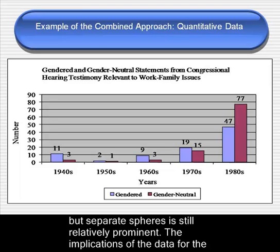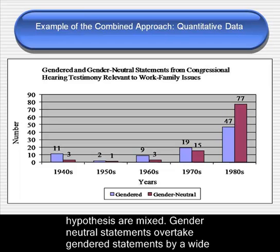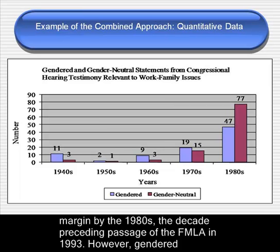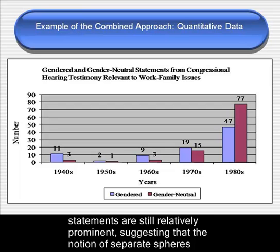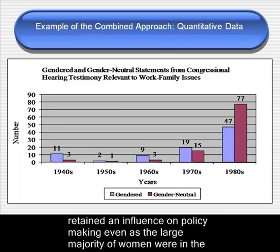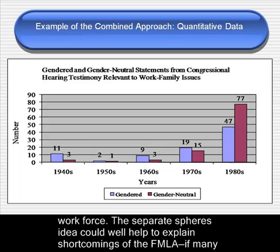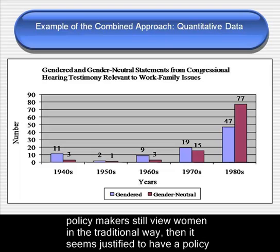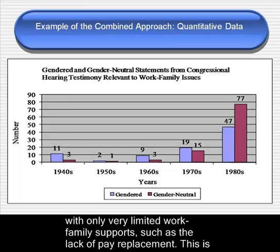The implications of the data for the hypothesis are mixed. Gender-neutral statements overtake gendered statements by a wide margin in the 1980s, the decade preceding passage of the FMLA in 1993. However, there are still many gendered statements, suggesting that the notion of separate spheres retained an influence on policy-making, even as the large majority of women were in the workforce. The separate spheres idea could well help to explain shortcomings of the FMLA. If many policymakers still view women in the traditional way, then it might seem justified to have a policy with only very limited work-family supports, such as the lack of pay replacement.